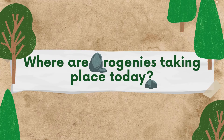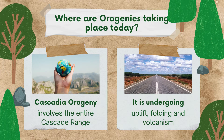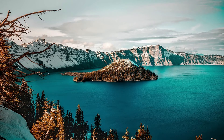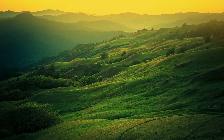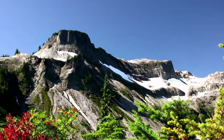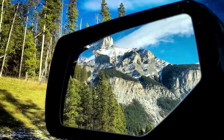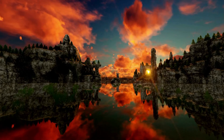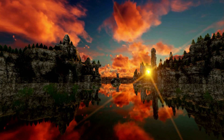One interesting question would be: where are orogenies taking place today? The currently ongoing Cascadia Orogeny, for example, involves the entire Cascade Range — a major mountain range of Western North America, extending from Southern British Columbia through Washington and Oregon to Northern California. The area just east of the Cascade Range is undergoing uplift, folding, and volcanism, and all the area west of the Cascade Range, including the coast ranges. The Cascade Orogeny began approximately 100 million years ago.